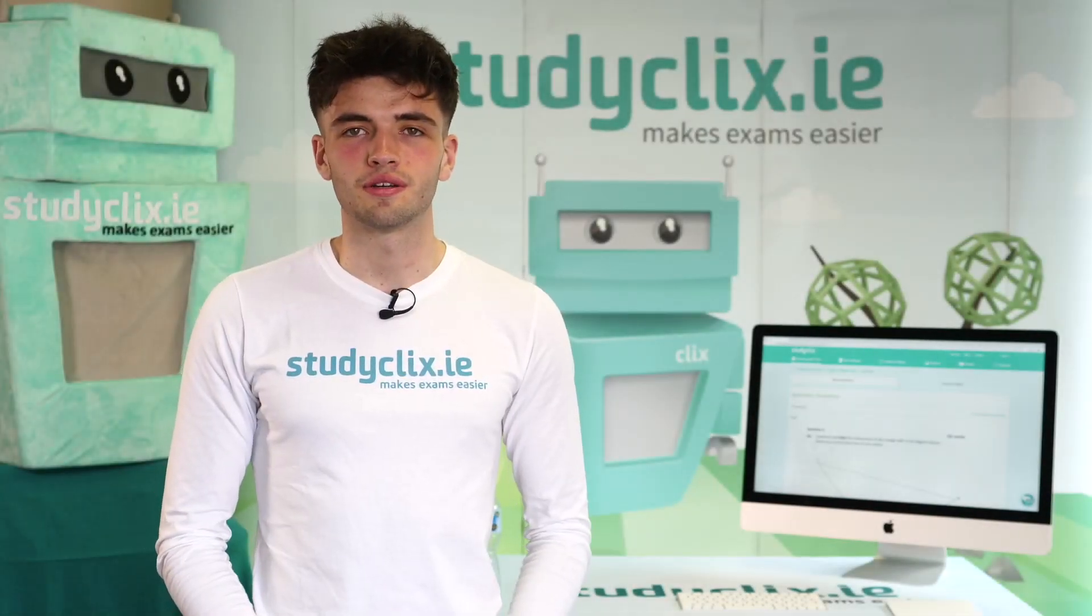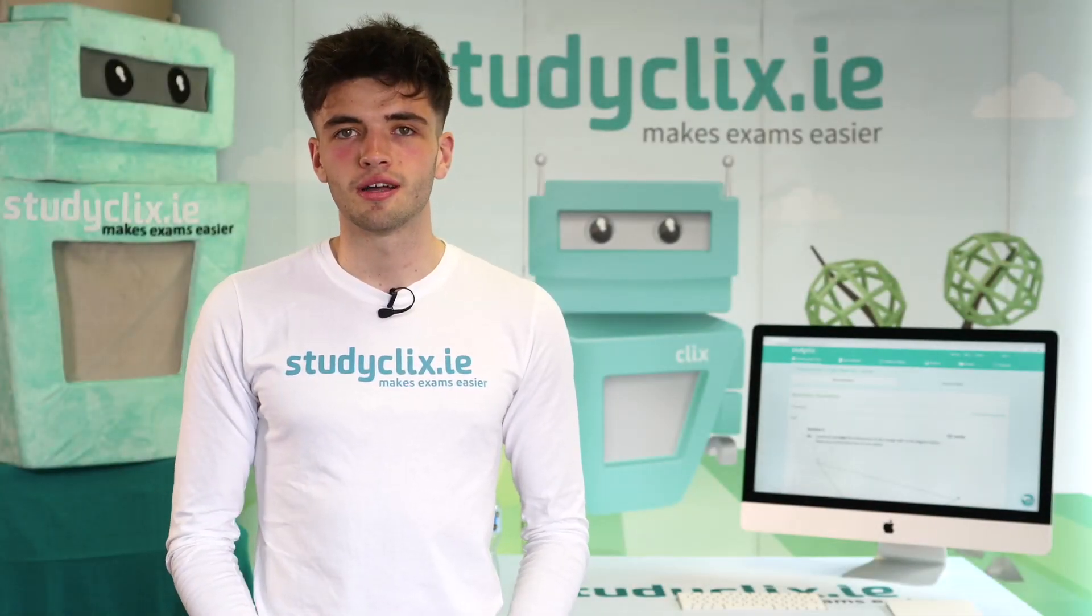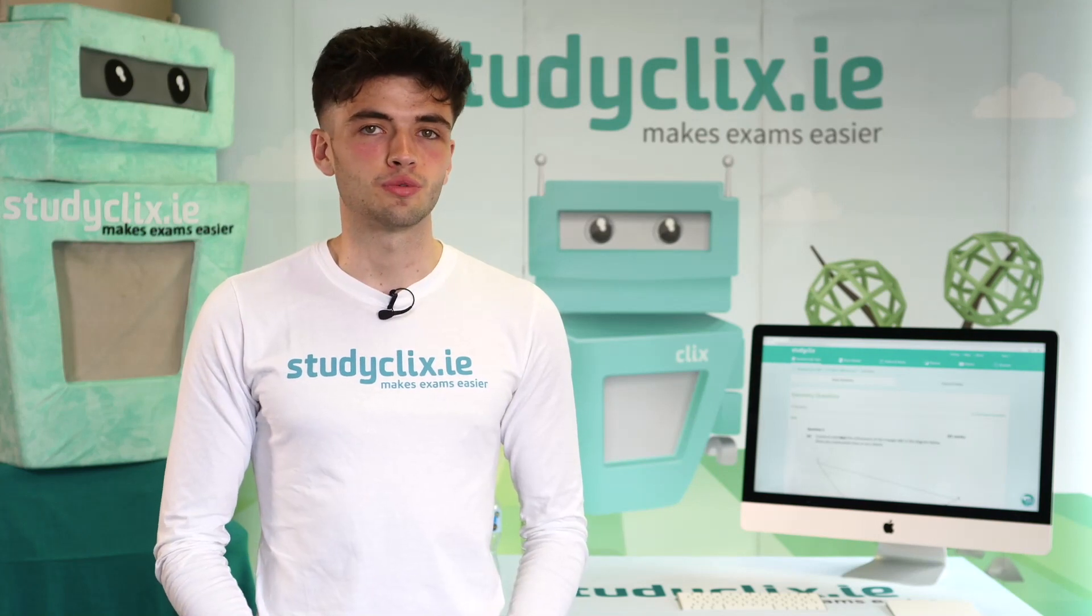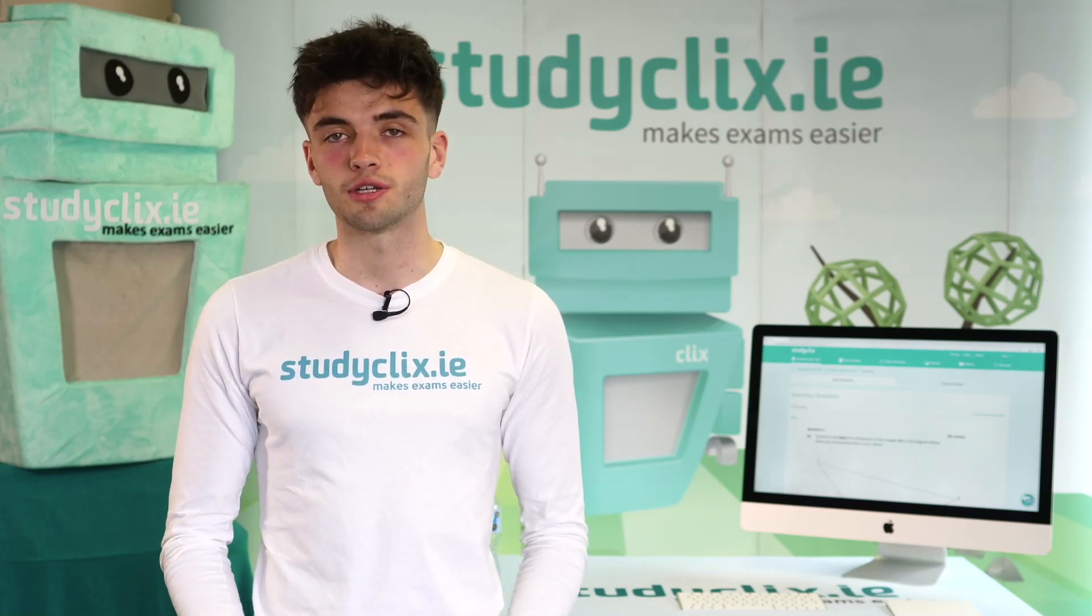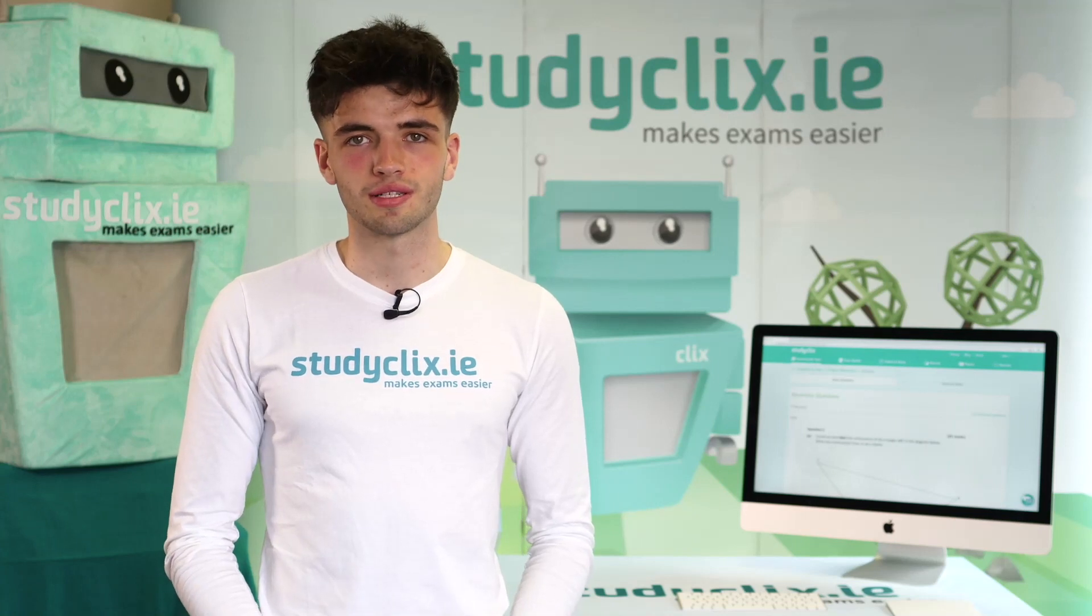Hi guys, welcome to today's video. This is 2019 paper 1 question 5. It's going to illustrate the relationship between complex numbers and quadratic equations, and there's going to be some practice with de Moivre's theorem. So let's get into the video.